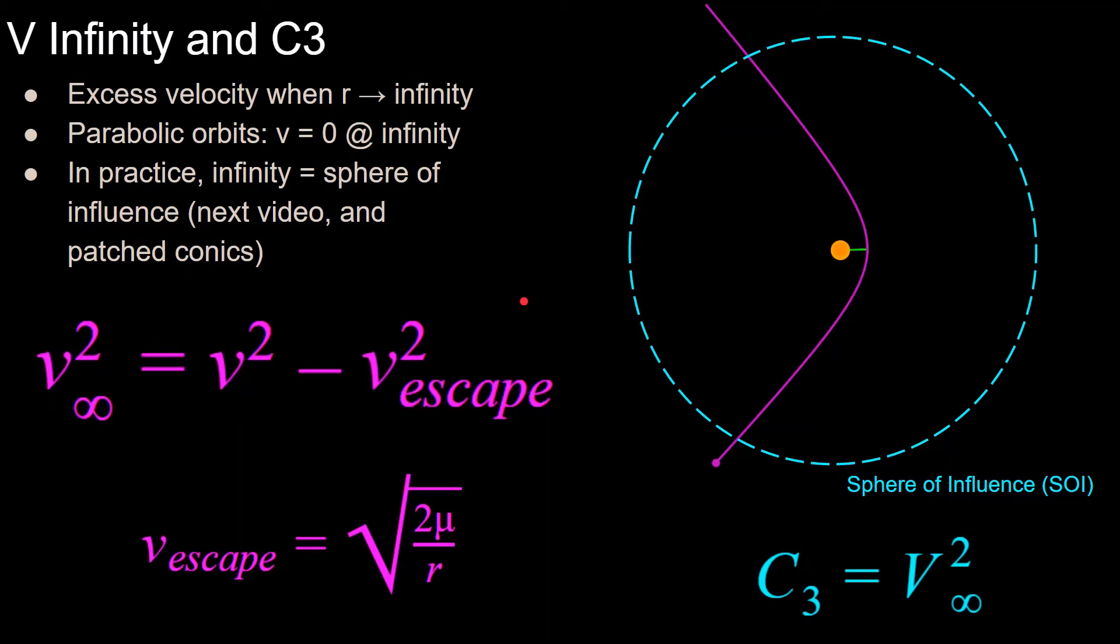And just as a side note, launch vehicles usually give a C3 value for how much payload that they can deliver beyond Earth orbit, which is equal to v infinity squared and is known as characteristic energy.